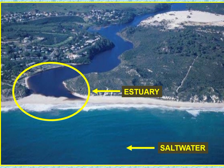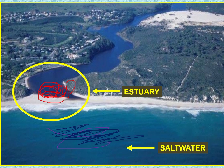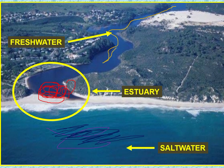This is the estuary — this part right here. Salt water meets fresh water at this point. The fresh water comes from the rivers, and when it reaches this area, it meets the salt water. That meeting point is the estuary.